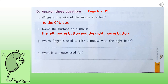The third question is: which finger is used to click a mouse with the right hand? When we say 'click' we are talking about pressing the left mouse button. For a right-handed person, we use the index finger for clicking, as the index finger is placed on the left mouse button. So the answer is: the index finger is used to click a mouse with the right hand.